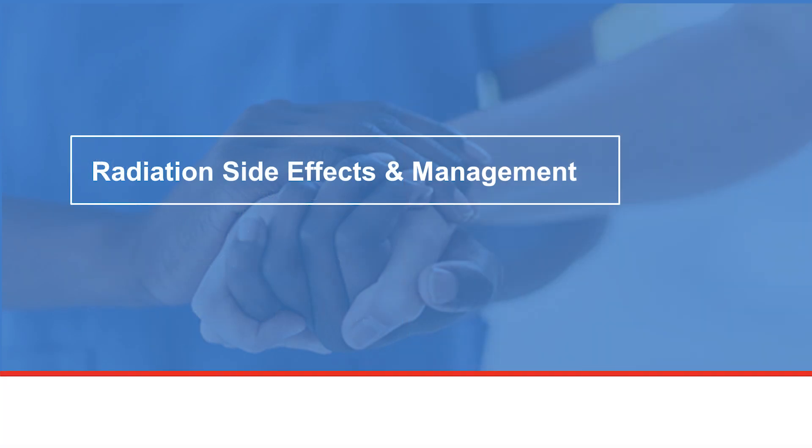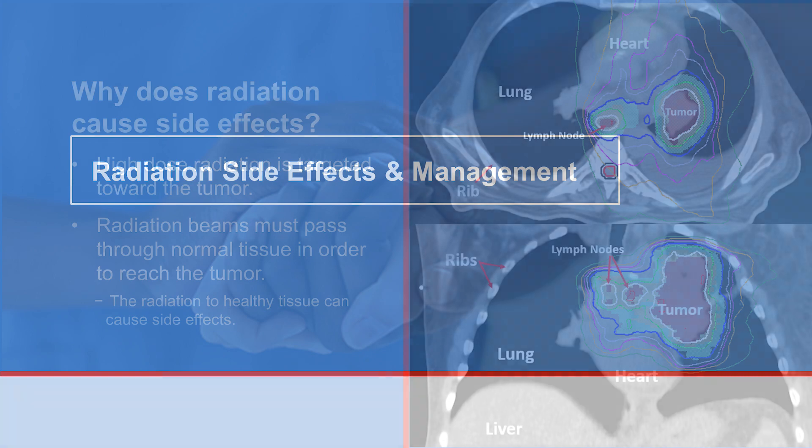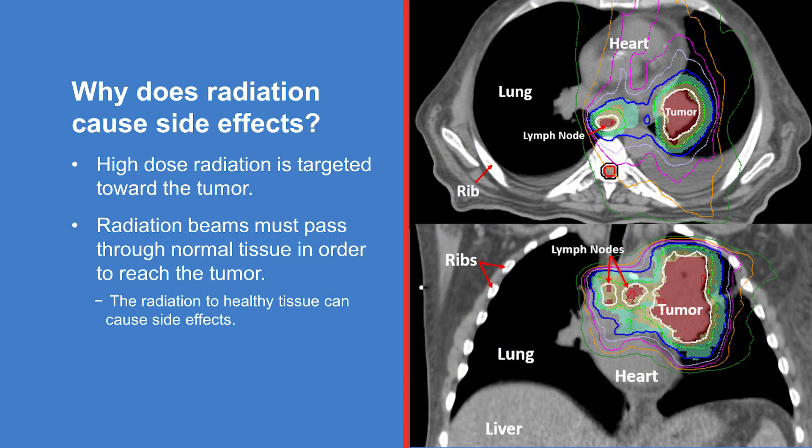In this section, we will discuss possible side effects of radiation. Radiation causes side effects because the radiation beams pass through normal tissue to reach the tumor. The high-dose radiation, shown by the blue line, surrounds the tumor, but lower-dose radiation, shown in purple, orange, and green lines, also affects some of your normal tissues nearby. Side effects are caused by the dose to the normal tissues.